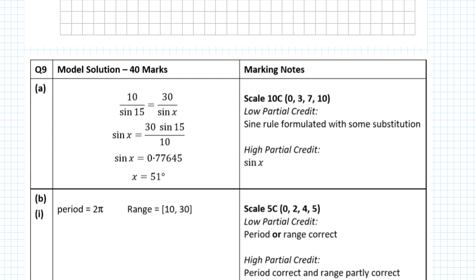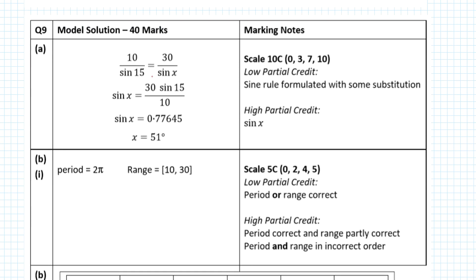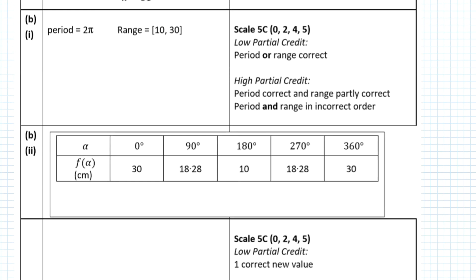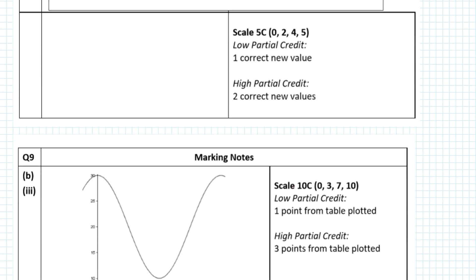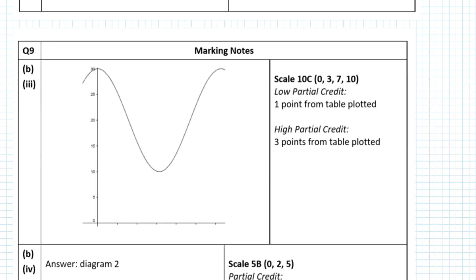Let's look through the marking scheme. Only 40 marks total for the question. 10 marks just for using sine rule - that's a lot of marks. 5 marks for getting the period or range. Most people got the range and struggled with the period. Filling in the table is 5 marks. Most people get 18.28 wrong and put 28.28. The graph is 10 marks - 3 points from the table plotted for 7 marks.